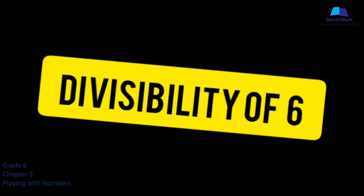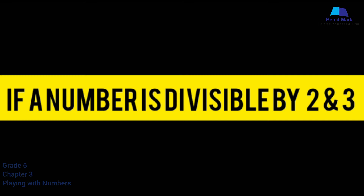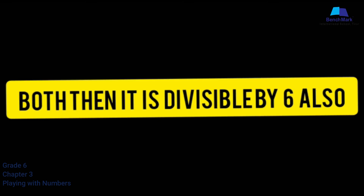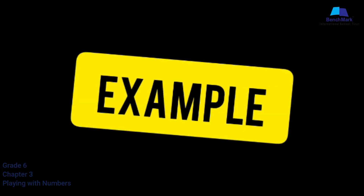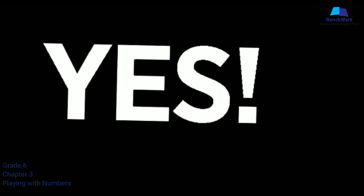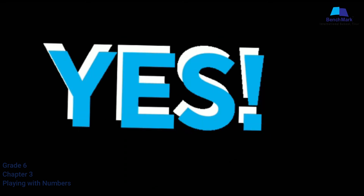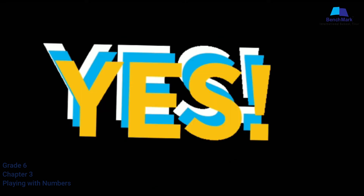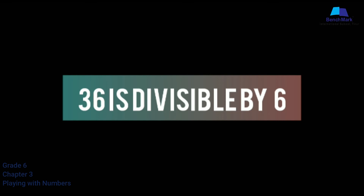For divisibility by 6: if a number is divisible by both 2 and 3, then it is divisible by 6 also. For example, 36 is divisible by 2 and also divisible by 3, so the number 36 is divisible by 6.